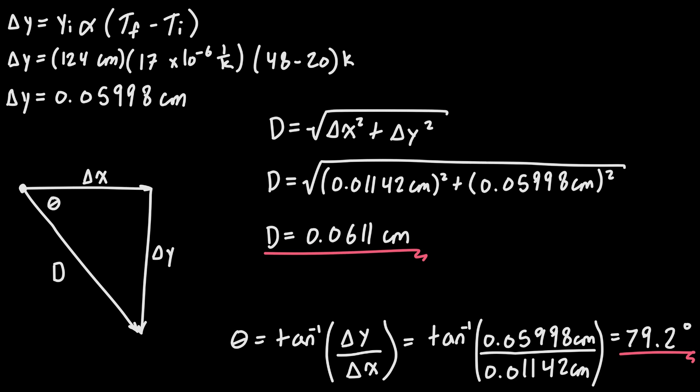If our temperature is going down or we're taking heat out of the object, then we'll get a negative value for our change in length, and all of that means is that our object is getting smaller because it's getting colder.